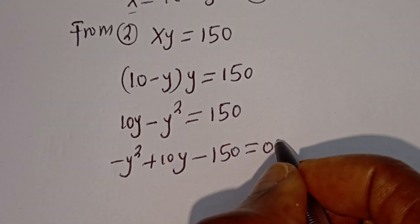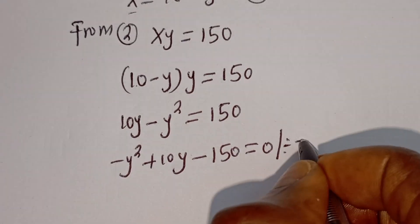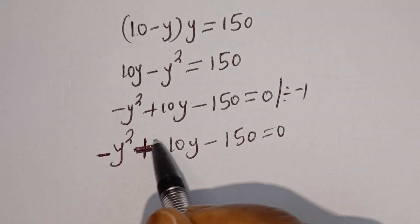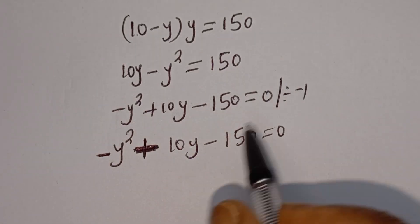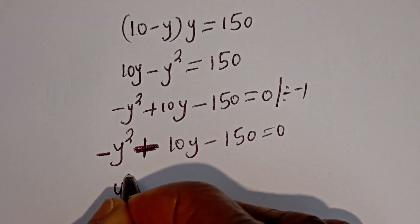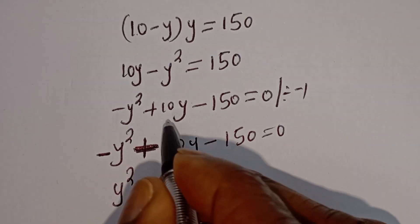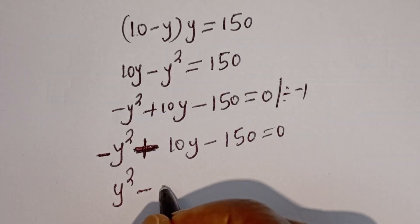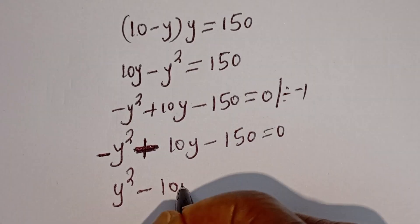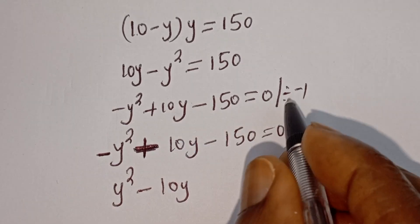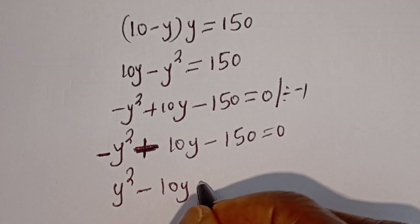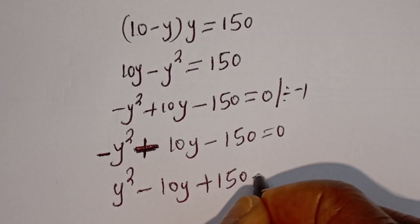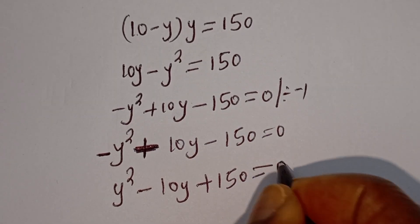Let's divide all terms by minus 1. Dividing minus Y squared by minus 1 gives Y squared. Dividing plus 10Y by minus 1 gives minus 10Y. Dividing minus 150 by minus 1 gives plus 150. So: Y squared minus 10Y plus 150 is equal to 0.